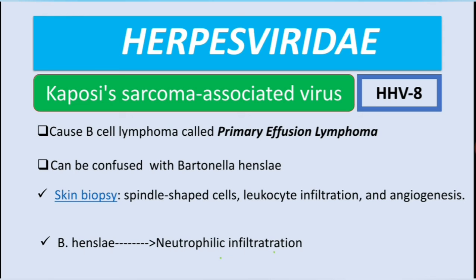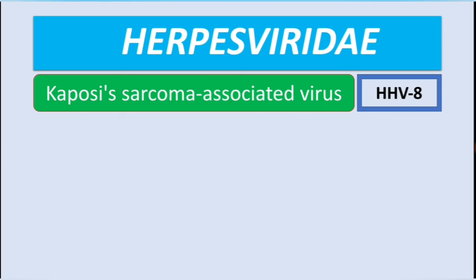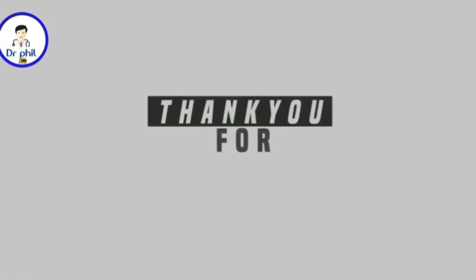For Bartonella you see neutrophilic infiltration, which is how you differentiate them. For Kaposi sarcoma, remember leukocyte infiltration; for Bartonella, remember neutrophilic infiltration. Regarding treatment, antiretroviral treatment is indicated in patients with HIV.